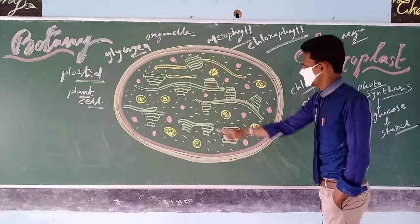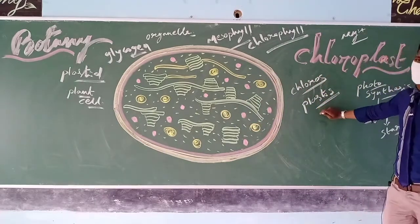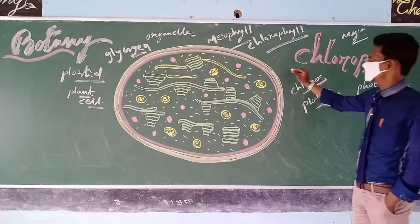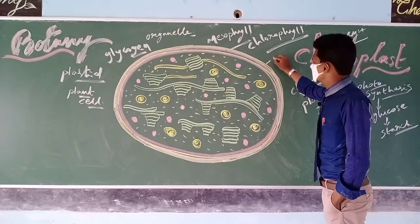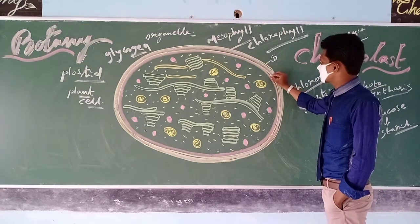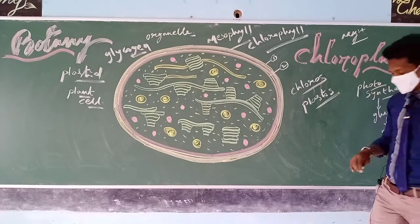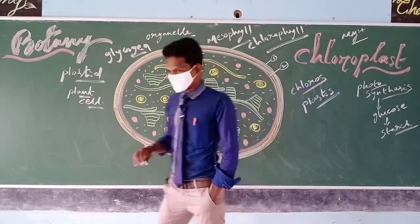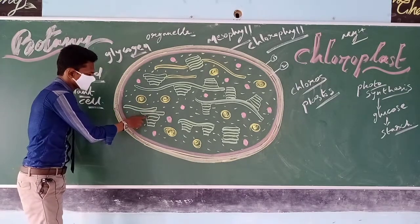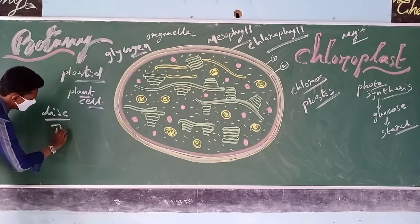Chloroplast can be discoid, round, oval, star-shaped, ribbon-shaped — it possesses different types of shapes. Chloroplast is made up of membranes: the first is the outer membrane, the second is the inner membrane. Then the third membrane is modified into special discs.